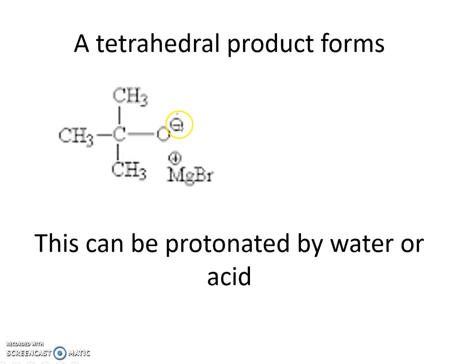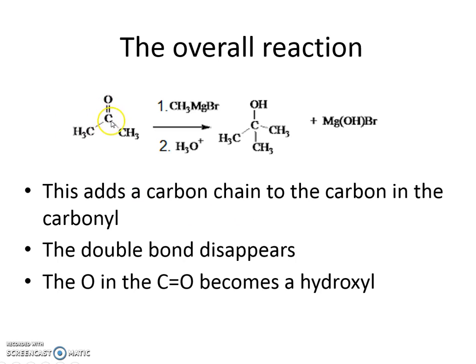Now, we have a negative charge on the oxygen that's very easily protonated by washing with water or acid. We almost always use acid to make sure that we protonate this to the fullest. The overall reaction here is that you have a ketone, aldehydes work too, but here we have a ketone and the Grignard reagent. The Grignard reagent is going to add to the carbonyl and the negative charge is going to jump up onto the oxygen. The Grignard reagent adds a carbon chain to the carbon in the carbonyl. That double bond disappears and then that oxygen has negative charge on it and it becomes protonated. It becomes an alcohol group.